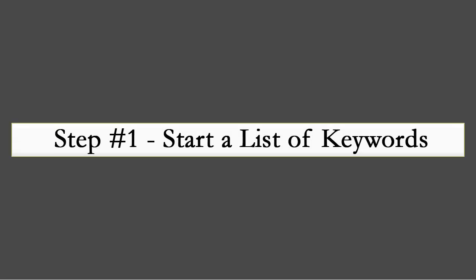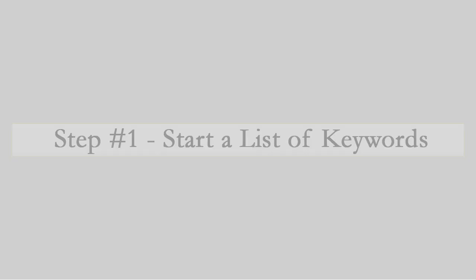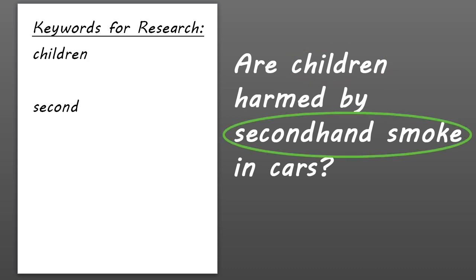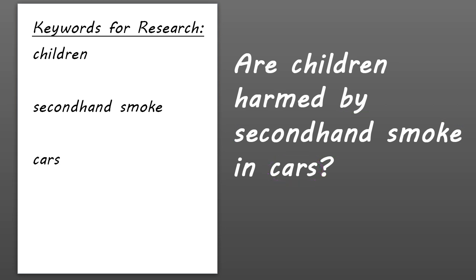Let's take a look at the process of creating a keyword list. We'll use the search question, 'Are children harmed by secondhand smoke in cars?' as an example. First, you'll need to identify the distinctive terms in your search question. Children, secondhand smoke, and cars are all distinctive terms.